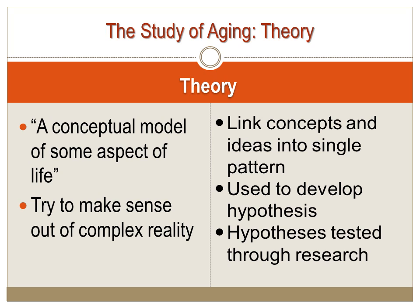In gerontology there are many theories to address aging. Some are biological theories, such as why skin wrinkles or why some people develop more health problems than others as they age. There are theories based on psychological aging, such as mental issues like dementia. There may also be sociological research, such as how social change impacts retirement, including discussions about Social Security and the possibility of disbanding it for future generations.